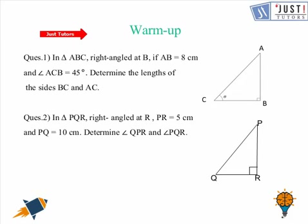So question number 1 says: in right angle triangle ABC, right angle at B, if AB is equal to 8 cm and angle ACB is equal to 45 degrees, determine the length of the side BC and AC.